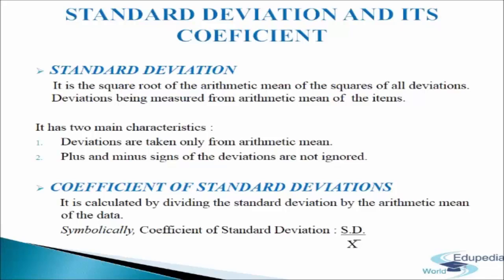Standard deviation. The methods of measuring dispersion discussed so far are not universally adopted for want of adequacy and accuracy. Range is not satisfactory as its magnitude is determined by the most extreme cases in the entire group. Quartile deviation has no algebraic properties and its interpretation is difficult. Mean deviation is also unsatisfactory as it ignores the algebraic signs of deviation. Therefore we need a measure of dispersion free from these shortcomings, and to some extent standard deviation is one such measure.